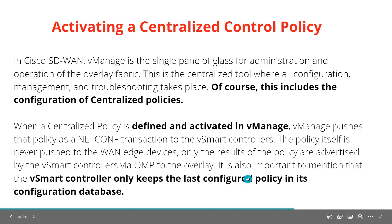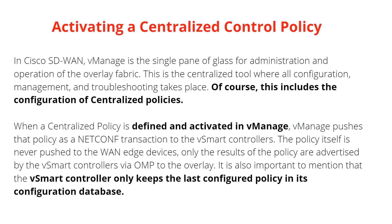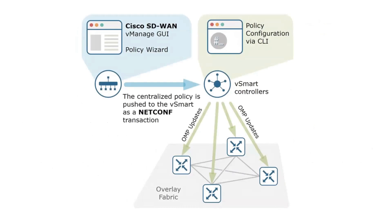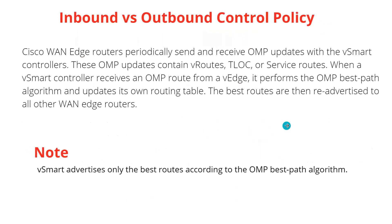It is also important to mention that the vSmart controller keeps the last configured policy in its configuration database. The best route is then re-advertised to other vSmart routers. vSmart collects multiple paths from each side, chooses the best path, puts it into its table, and re-advertises to vEdges — same behavior as OSPF best path algorithm.